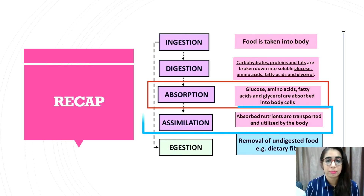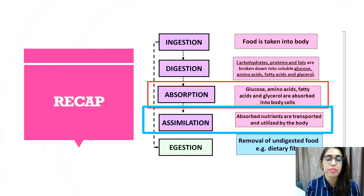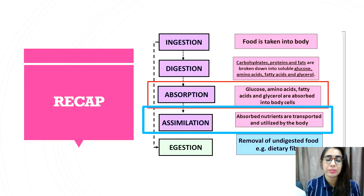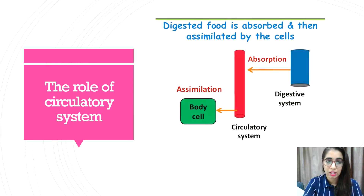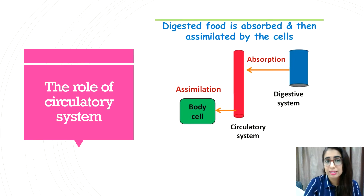Today we are going to look into assimilation, where assimilation is when the absorbed monomer is brought into the body cells and is used to build a large molecule. Food is absorbed into the villi of the small intestine and is transported in the circulatory system to the body cells to be assimilated.